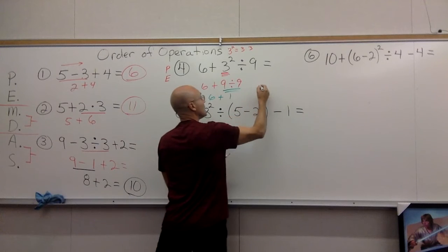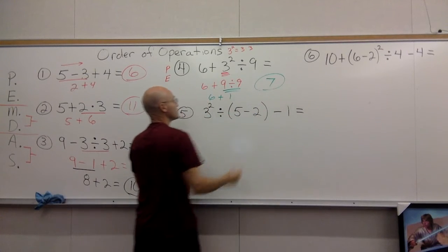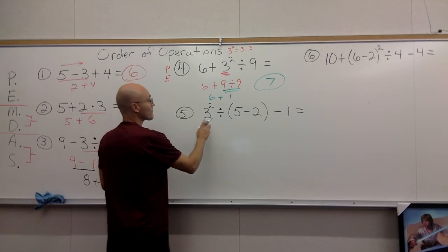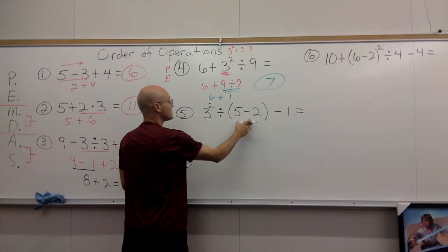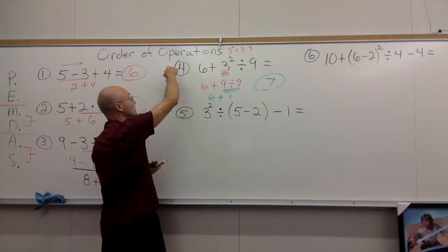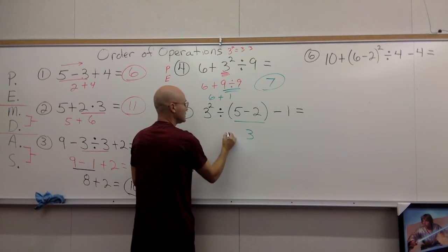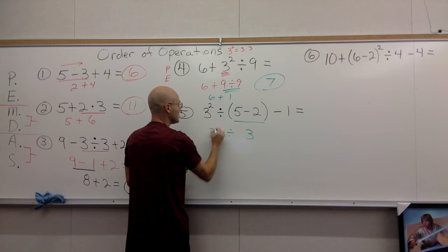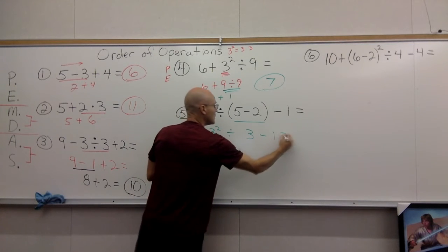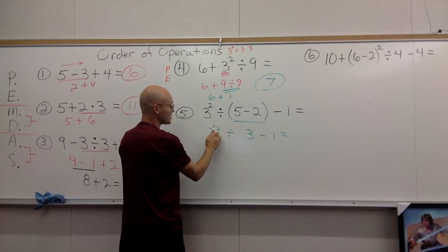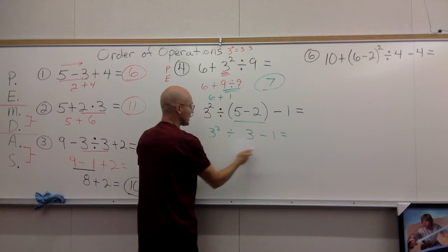Number five, I see parentheses so that's the first part of PEMDAS. You need to subtract and you get 3, and you bring down everything else. Then you want to decide: are you going to do this exponent, are you going to divide, are you going to subtract?